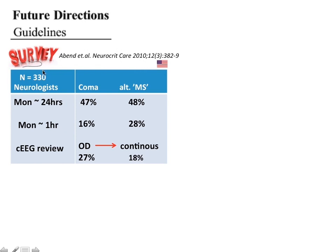A survey of 330 neurologists in the US revealed significant gaps in awareness. Forty-seven percent said monitoring should only be done for 24 hours in comatose patients — but the literature recommends up to 48 hours. Forty-eight percent said 24 hours is sufficient for altered mental status. Sixteen percent said one hour is sufficient for coma, and 28 percent said one hour is sufficient for altered sensorium — reflecting lack of awareness.